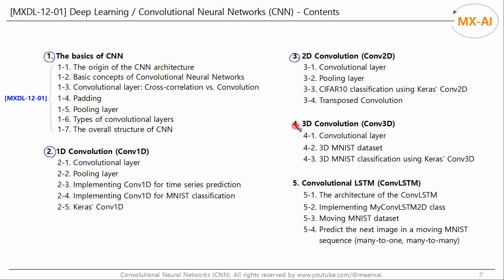In Chapter 4, we will look at 3D convolution, which can be used for 3D image slices such as medical imaging, or for videos such as action recognition data. In Chapter 5, we will look at the convolutional LSTM, which can be used for sequences of images.